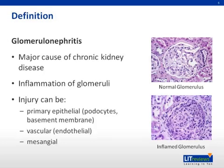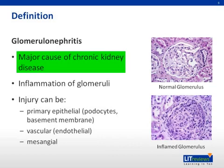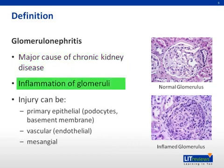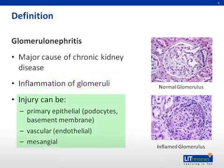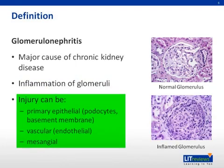Glomerular nephritis is a major cause of chronic kidney disease. It is characterized by inflammation of the glomeruli, which alters the filtration barrier. This leads to proteinuria and often to hematuria and impaired kidney function.